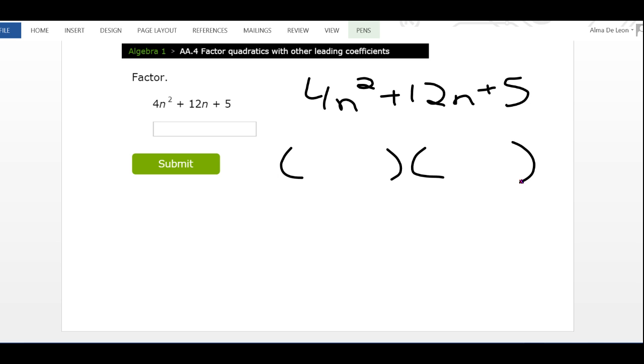I'm looking for two things that multiply to give me 4n². I'm going to try 2n times 2n. Sometimes this works, sometimes it doesn't, we just kind of have to guess and check. Then 1 times 5 gives me 5, so let's try positive 1 and positive 5.